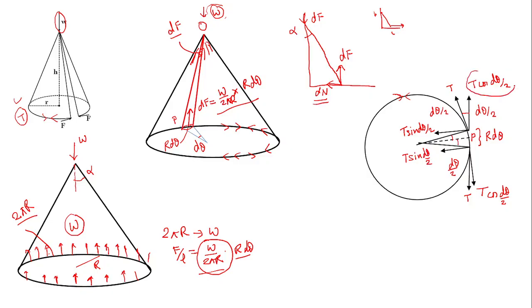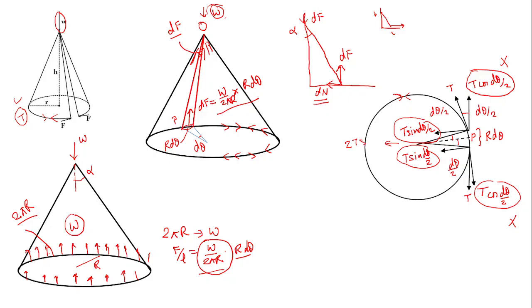For small dθ, sin(dθ/2) ≈ dθ/2, so the resultant inward force becomes 2T·(dθ/2) = T·dθ. This is the value of dN we needed. So dN = T·dθ.